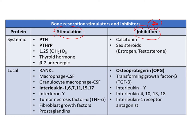Certain hormones like parathyroid hormone and vitamin D stimulate bone resorption, whereas others such as calcitonin and sex hormones like estrogen and testosterone bring about inhibition of bone resorption. Local factors like interleukins and TNFs stimulate bony resorption, while OPG reduces bony resorption.